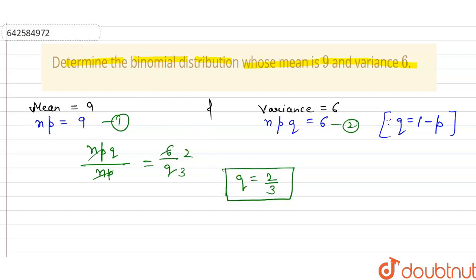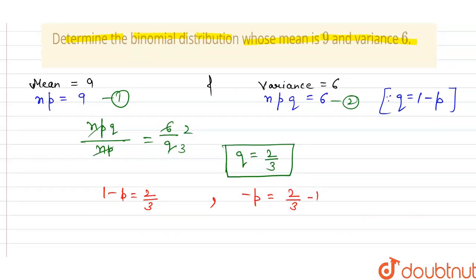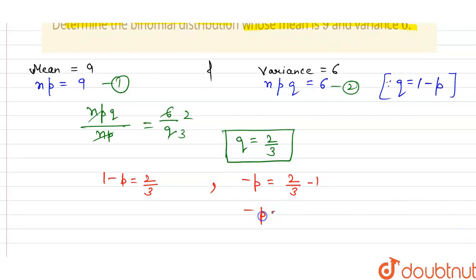of p, 2 divided by 3 minus 1, and that is equal to 2 minus 3 divided by 3, means minus 1 divided by 3. And so the minus minus cancel out, then value of p is equal to 1 divided by 3.